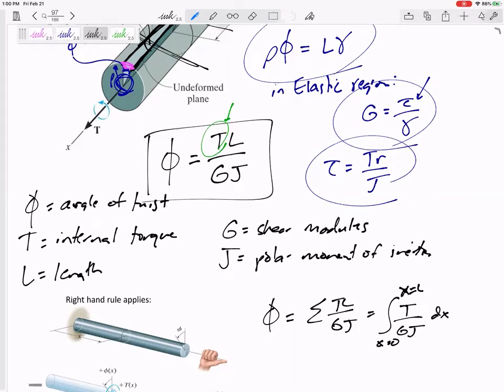Last class we introduced this equation that the angle of twist is TL over GJ. The angle of twist is this angle that your cross-section twists compared to where it is from one end to another.